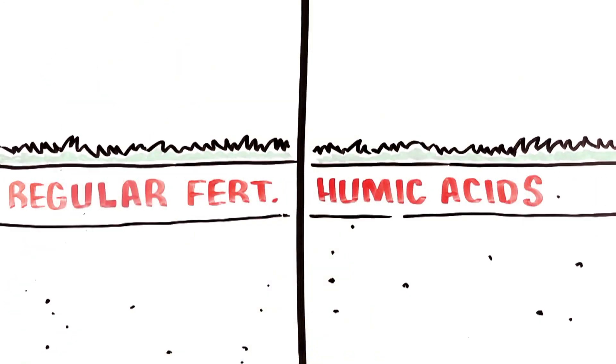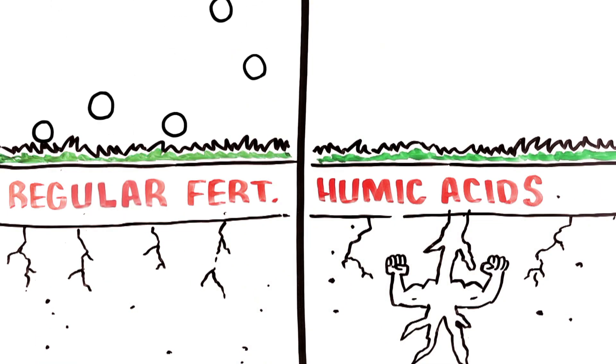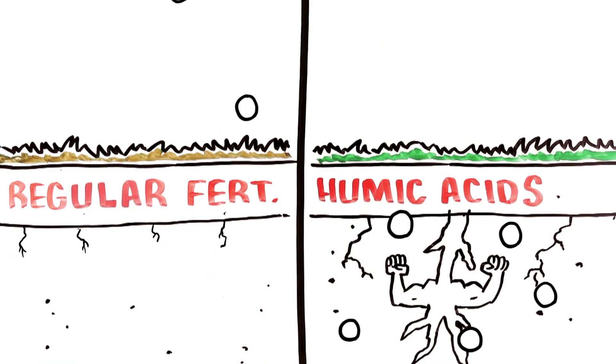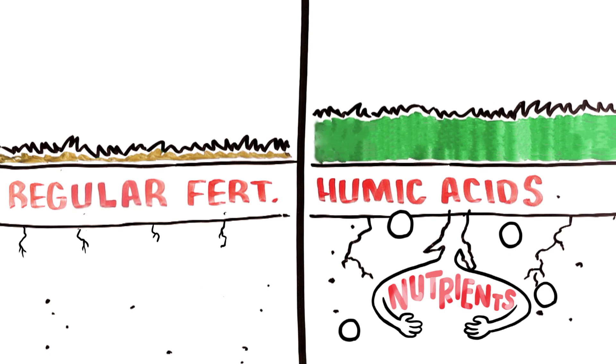Humic is the building block of any good topsoil. It allows for better water infiltration and increases the plant metabolism and growth. They hold the nutrients in the root zone for longer periods of time. Now we're helping that subsoil behave more like topsoil.